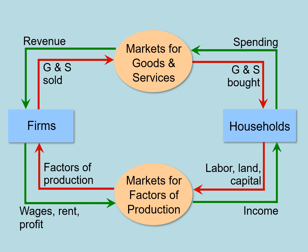Let's focus on the side where firms interact with the markets for factors of production. Factors of production, like labor, land, and capital, are valuable. In order for us to measure that value, we can look at the wages, rent, and profits that firms have to pay households as income. By looking at income, we can therefore find the value of those goods and services.